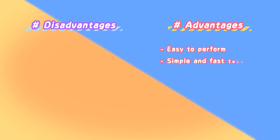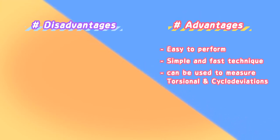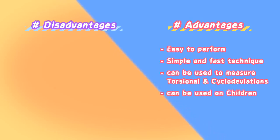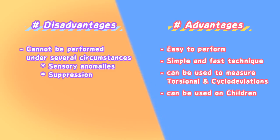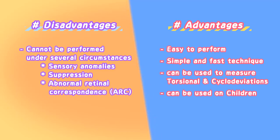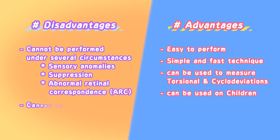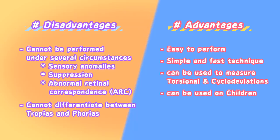Advantages of the Maddox Rod test: it is easily performed, it is a simple and fast technique, it can be used to measure torsional and cyclodeviation, and it can be used on children. Some disadvantages are: it cannot be performed if sensory anomalies are present; it cannot be performed if the patient has suppression, as they will not be able to see the light; it cannot be performed if there is ARC, as the angle of separation of the images will not correspond to the angle of deviation, leading to inaccurate results; and it cannot differentiate between tropias and phorias. It can only be done subjectively.